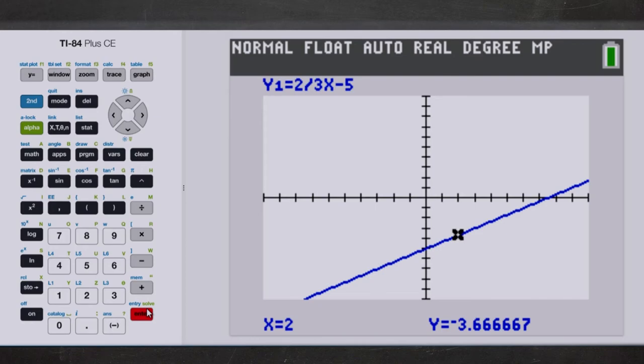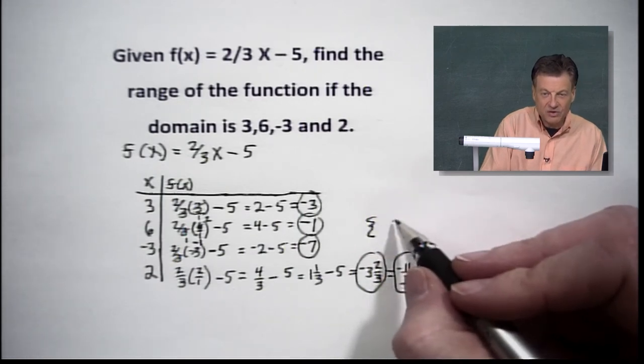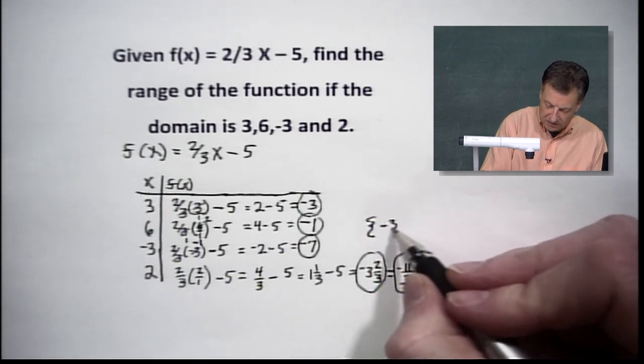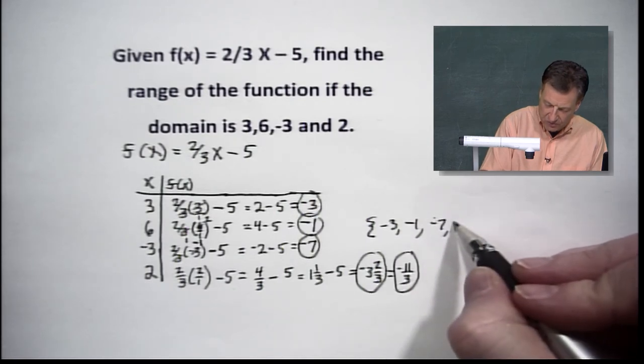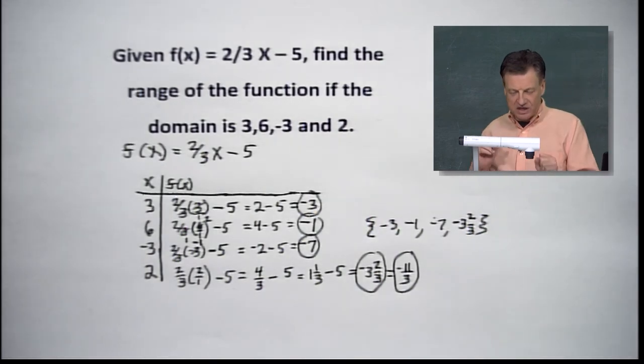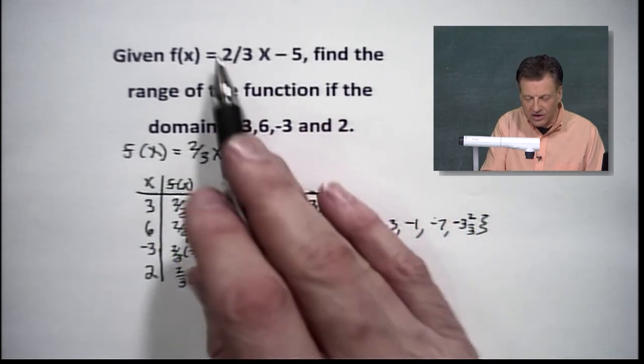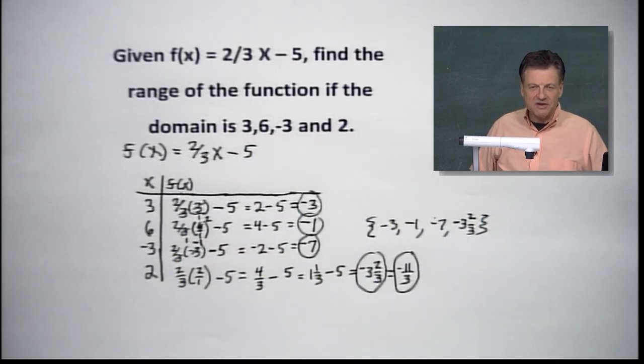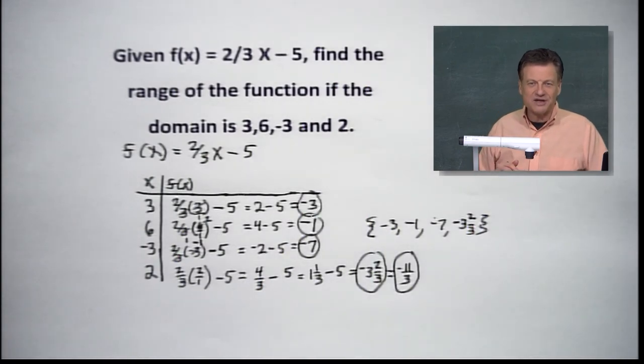Let's go back to our front page here. Our range is going to be negative 3, negative 1, negative 7, and our last member of the range was negative 3 and 2 thirds. So there you have it. That's your range for the domain. It's so nice because this whole thing is a linear graph. It's a linear function. You can check with your graphing calculator or you can just check your points and see if they plot on that line. And that, folks, problem of the day for today.